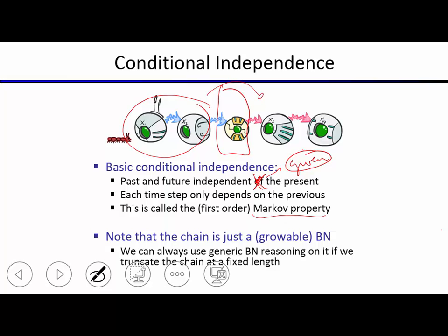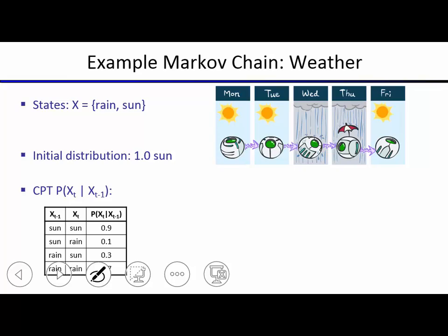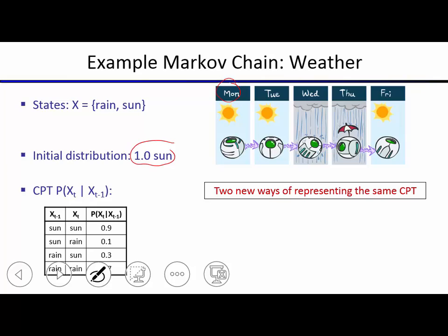This is effectively just a Bayes net that grows as time passes. A simple example: the state can be either rain or sun, with time corresponding to days. The initial distribution is 100% sunny. The conditional distribution shows that when it's sunny it's likely to stay sunny, and when it's rainy it's likely to stay rainy, but the weather can change from day to day.